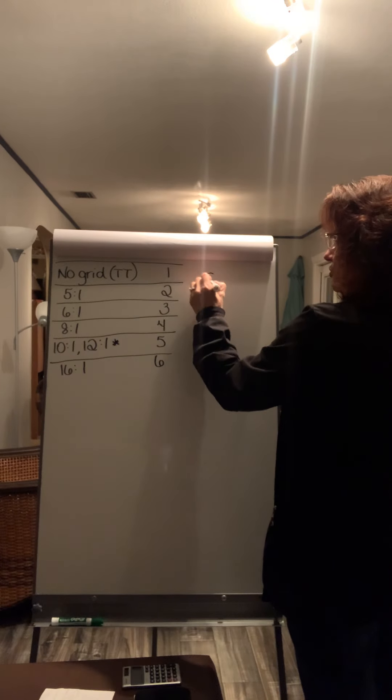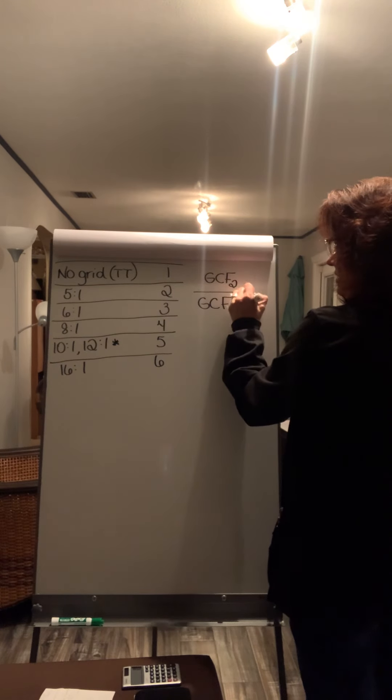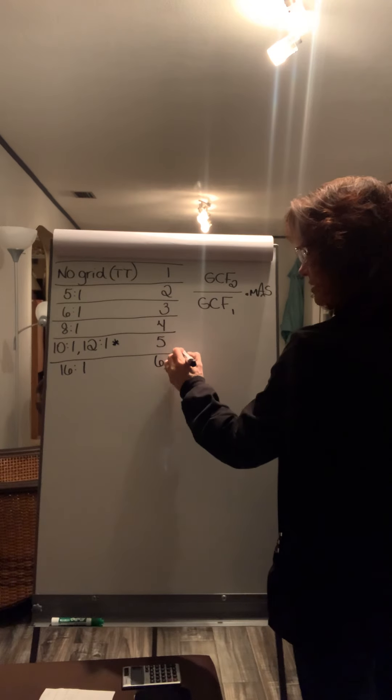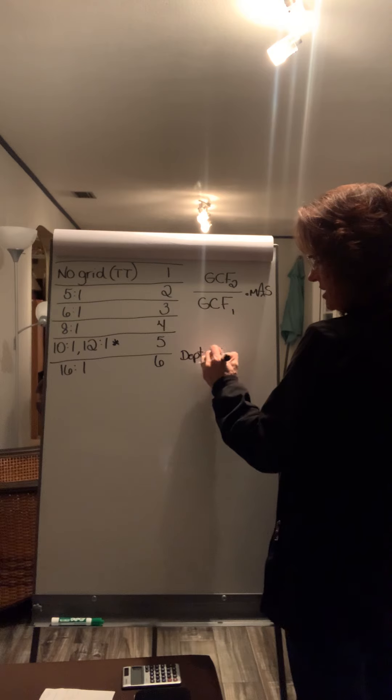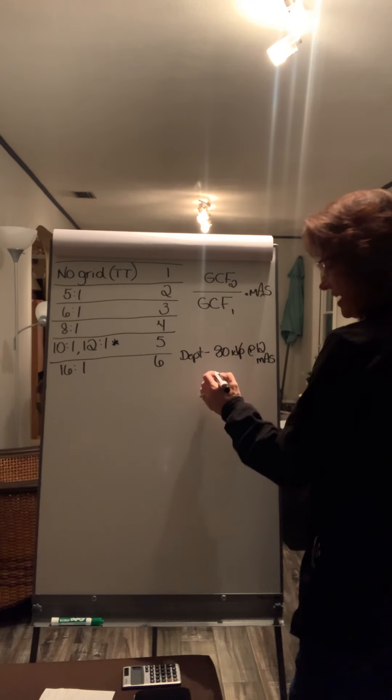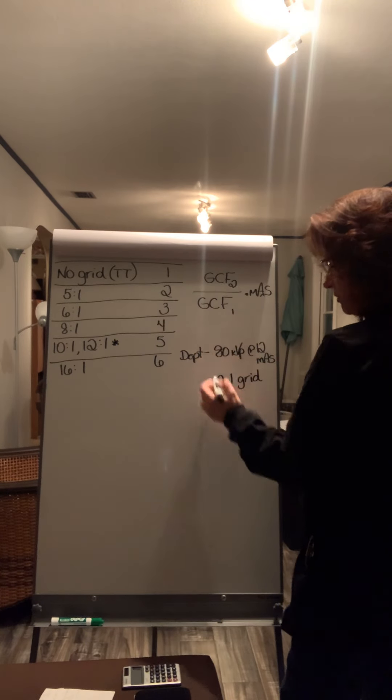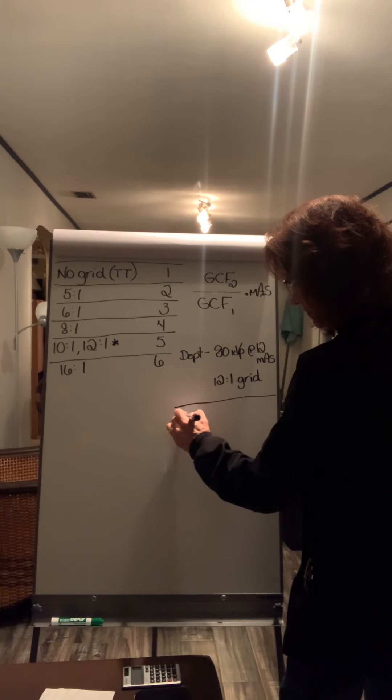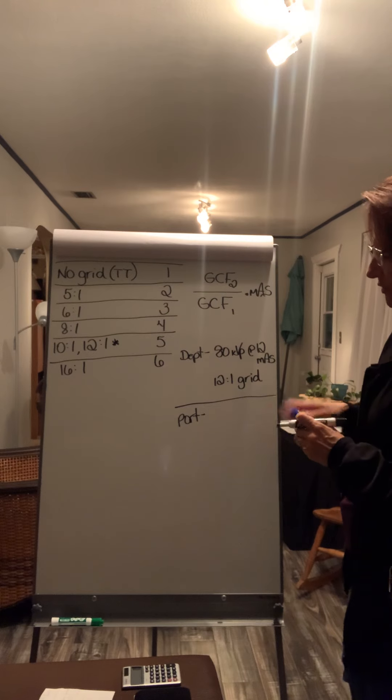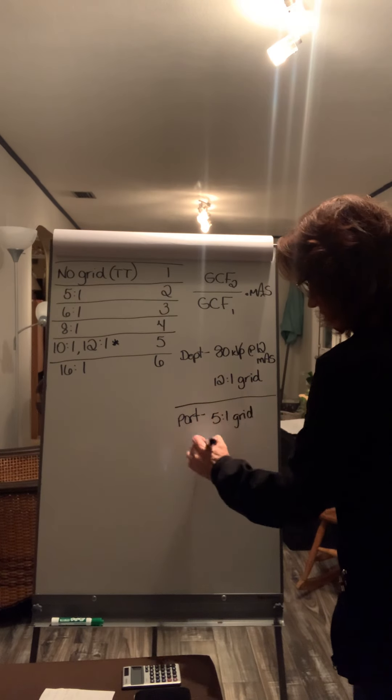So the formula is GCF two over GCF one times your mAs value. All right. Let's say that you were in the department and you had a 12 to one grid ratio. And then you had to go on portables and do that same patient because he wasn't able to come to you. And this one was really good. This was diagnostic, but for the portable, the only grid you have is a five to one grid. So if you had a five to one grid, what would you use?